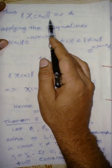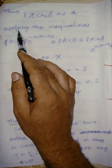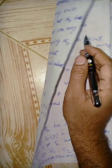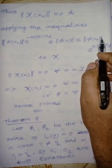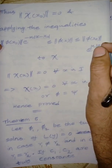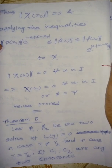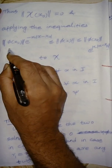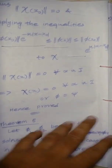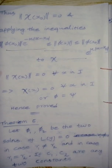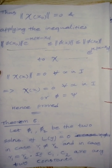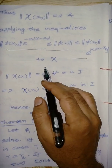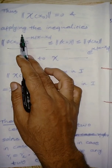Thus, the norm of chi of x0 equals zero. And applying the inequality from the last class video — the previous theorem — by applying this inequality we get the norm of chi of x equals zero.